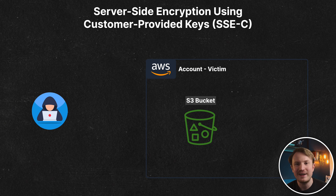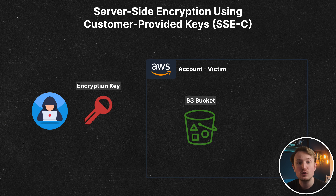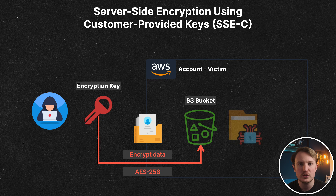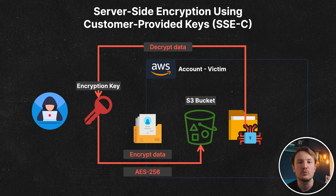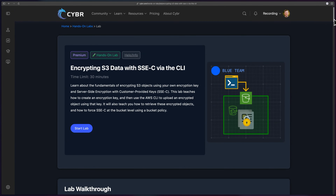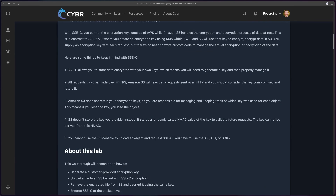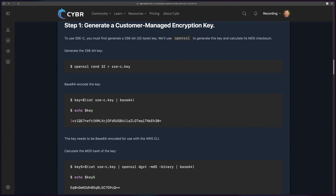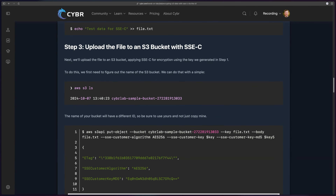A second way this attack can unfold is using server-side encryption with client-provided keys, or SSE-C. With SSE-C, you can store data encrypted with your own local encryption keys. When you upload an object, S3 uses that key to apply AES-256 encryption. When you go to retrieve that object, you have to provide the same encryption key. Whoever controls the key controls the data — and that's how an attacker can take advantage of it.